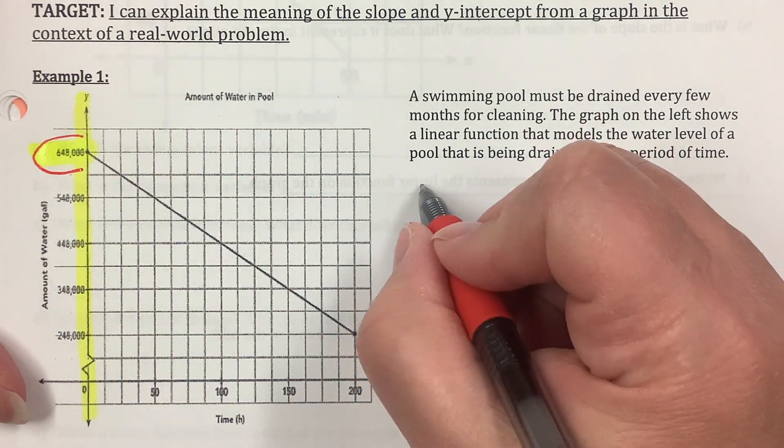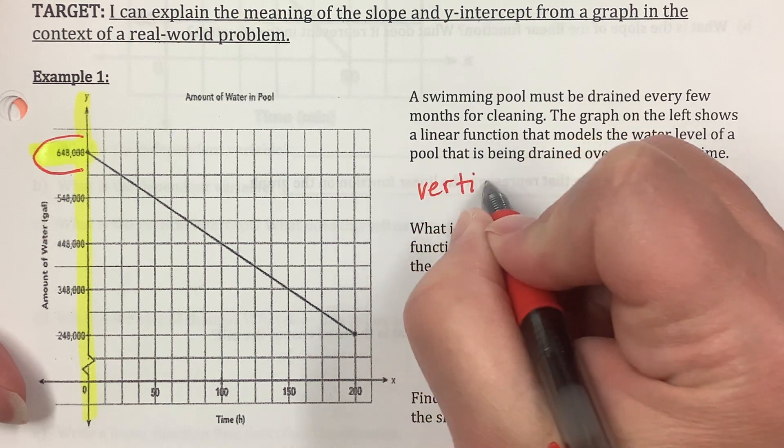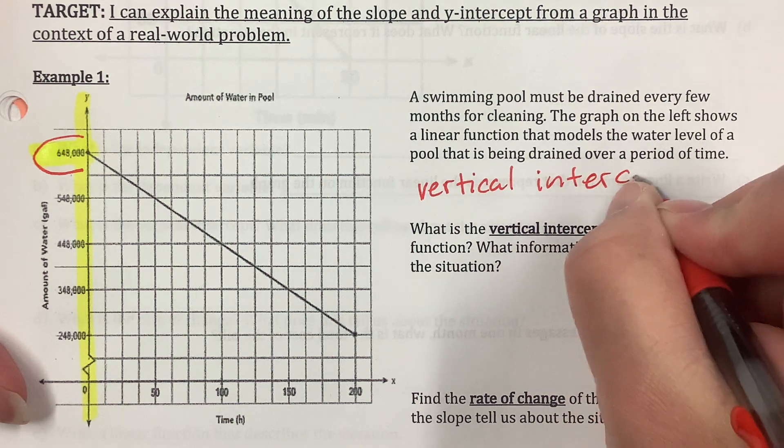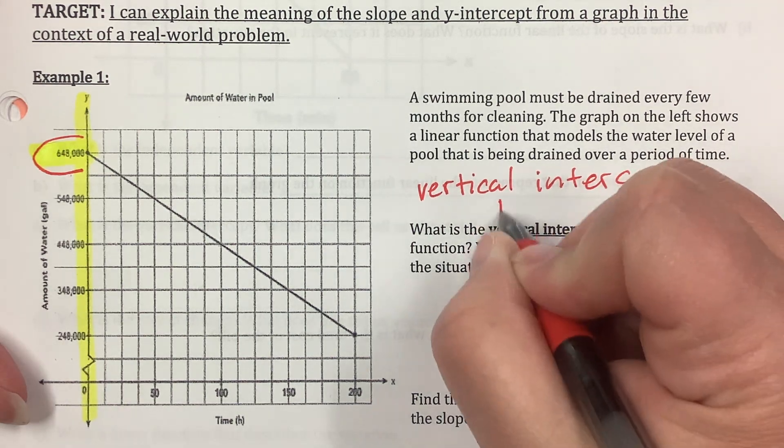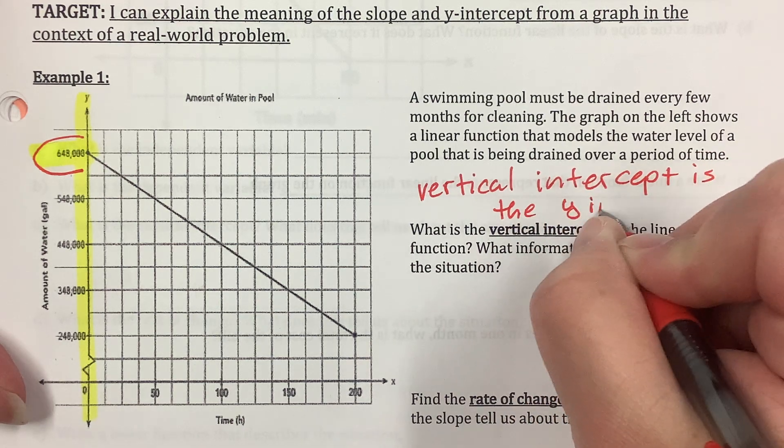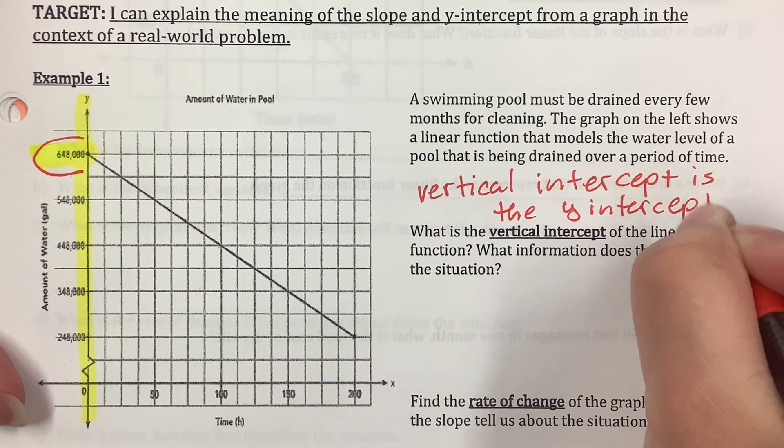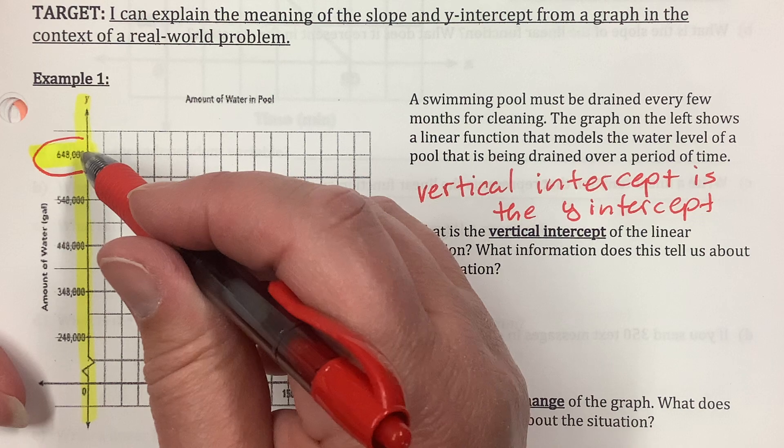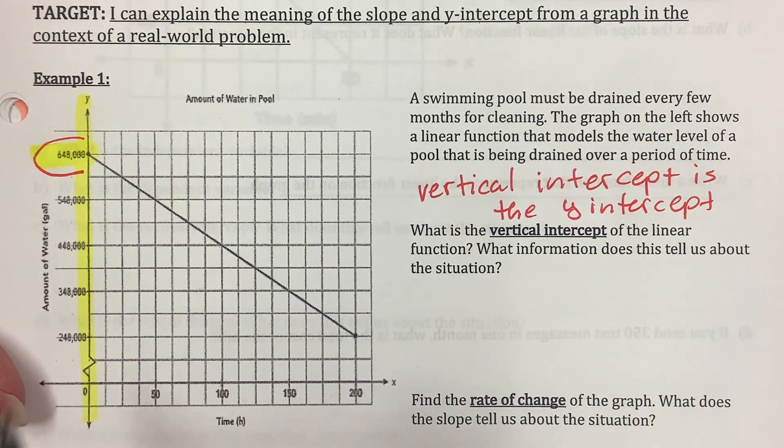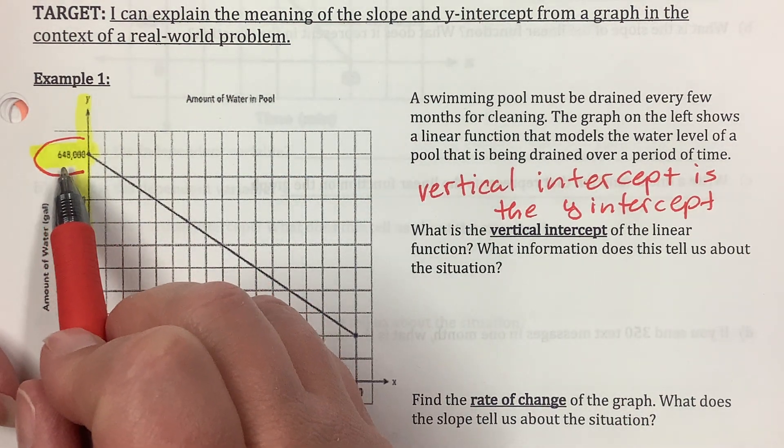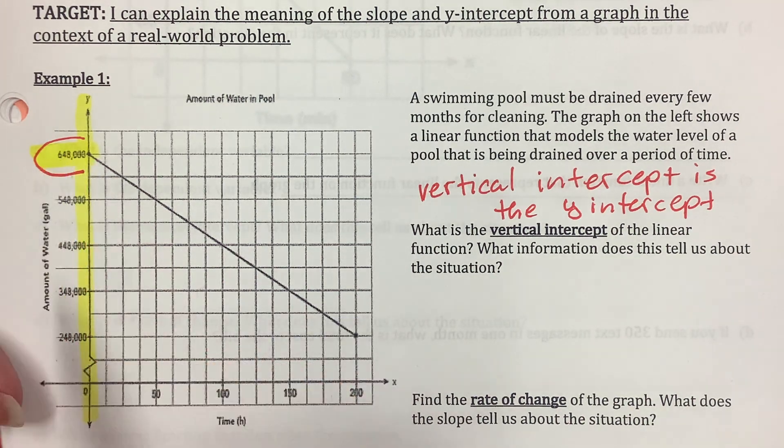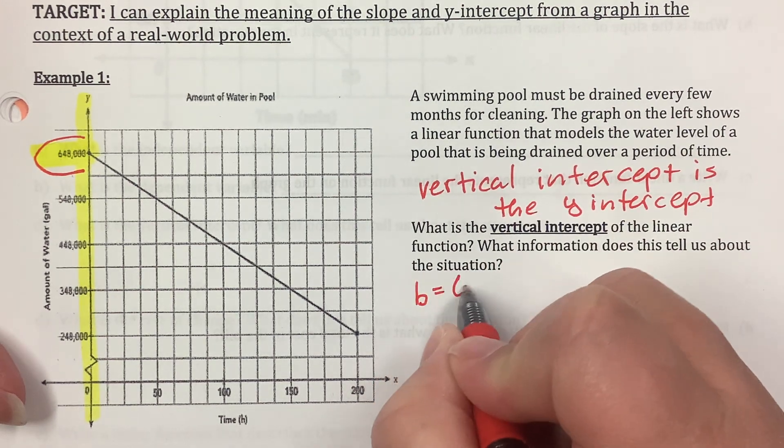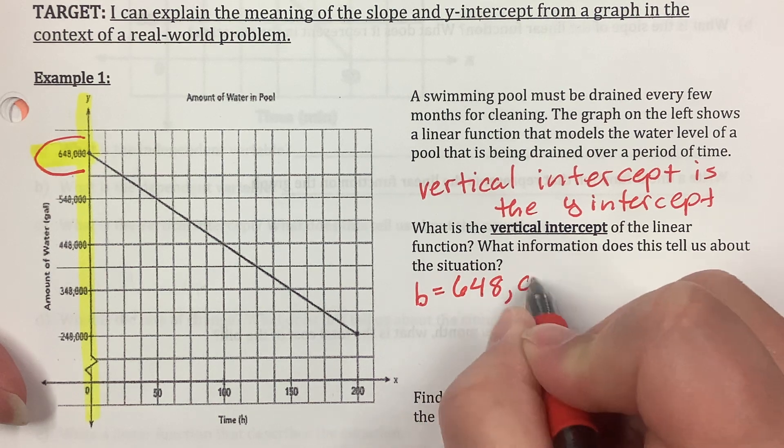What is the vertical intercept of the linear function? Well, vertical means up and down. I bet they mean this y-intercept right here. Sometimes they'll throw words at you that are new words, but they're not really new. They're just the same words that you've seen before, and that's your y-intercept right here. Okay, so I'm just going to write vertical intercept is the y-intercept.